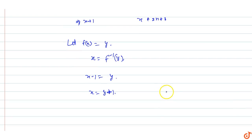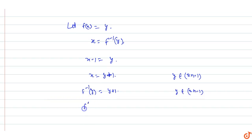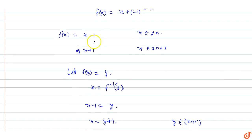So x equals y plus 1, where x belongs to an even number. Since x is even, y plus 1 is even, so y belongs to odd numbers (2N minus 1). Therefore f inverse of y equals y plus 1 where y belongs to odd natural numbers. So f inverse of x equals x plus 1 when x is an odd number.